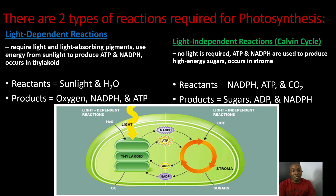Let's look at those reactions. First we have sunlight going in, then we have H2O — water — going into our thylakoid, and our chlorophyll is the pigment used to absorb that sunlight. The products are going to be oxygen, which is a by-product that is released, then ATP, and then NADPH — all three of those are products of this process.